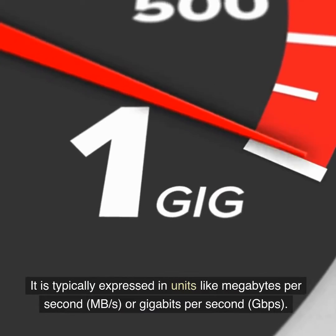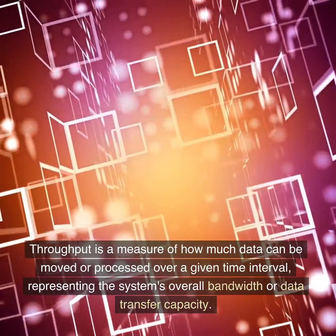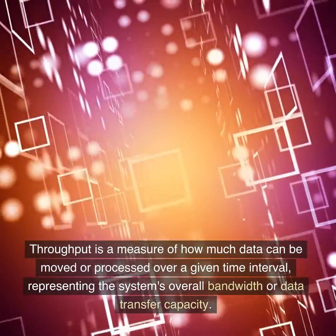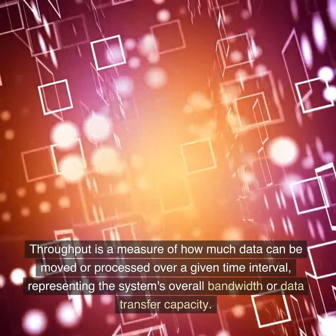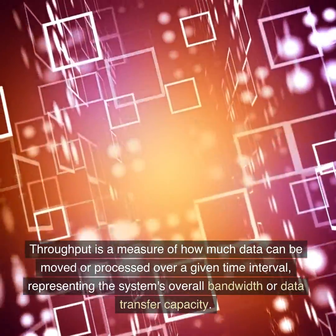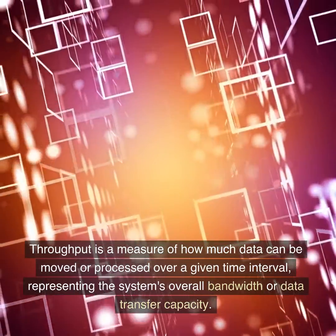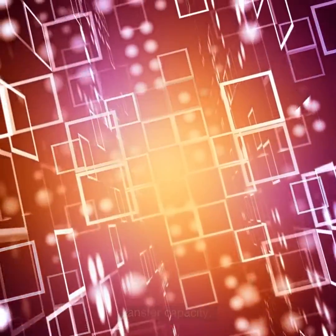or gigabits per second (Gbps). Throughput is a measure of how much data can be moved or processed over a given time interval, representing the system's overall bandwidth or data transfer capacity.